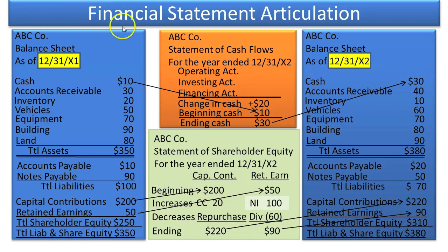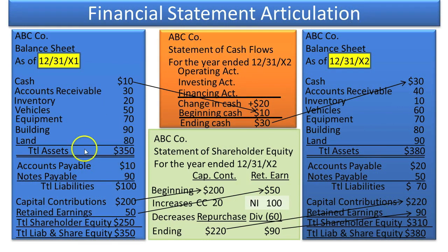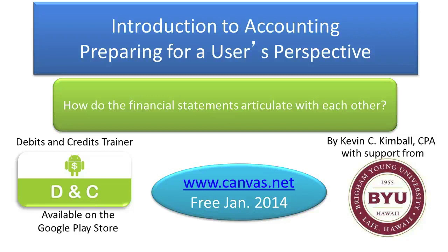The bottom line is that we had certain balances last year on our balance sheet, things happened to them as described on these financial statements, and these are our ending balances. Creditors and investors analyze all these financial statements that explain the old balances and the new, and how they got there — so they can understand how the company has done in the past and predict how it will do in the future. That ability to predict the future successfully is where the real money is in financial statement analysis. In the next topic, I will describe the expanded accounting equation.